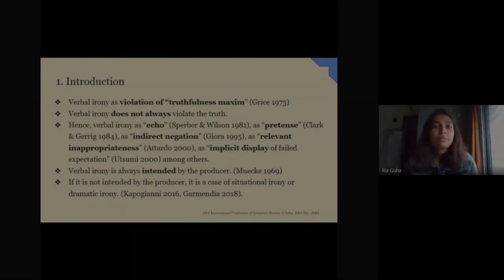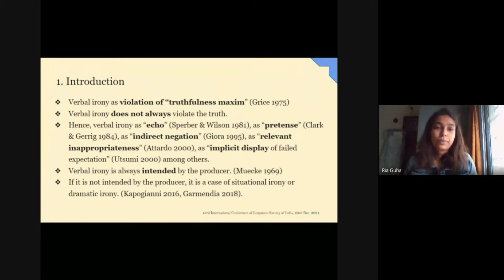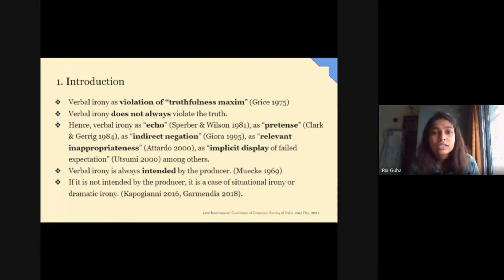Verbal irony is popularly known as saying the opposite of what one means. Grice's idea states it as a violation of truthfulness maxim where the implicature is opposite of the literal counterpart. But researchers have shown it does not always violate the truthfulness maxim nor is it always the opposite. So far there have been many theories of verbal irony like echo-theory, pretense theory and others. But the only common thing among them is the producer's ironic intention. If it is not present, it will be counted as situational irony and not verbal irony.